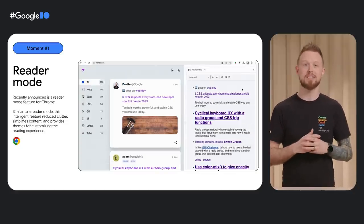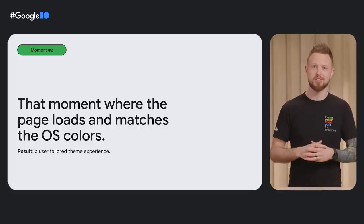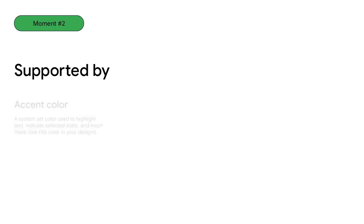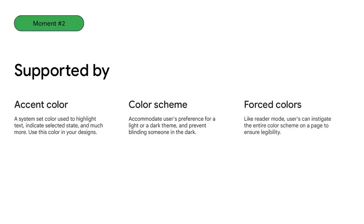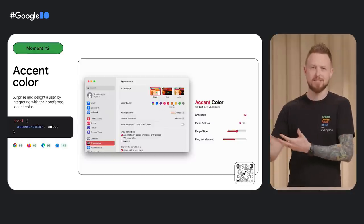Our next tailored web moment is that moment where the page loads and matches the operating system colors. The result is a user-tailored theme experience. This is supported by CSS accent color features, which represent the user's system color preference, the prefers-color-scheme media query for knowing if a user prefers light or dark, and the forced colors media query for knowing if a user has activated a forced colors mode. Surprise and delight a user with accent color — tailor the UI to their favorite color. See in this video as I change the color in my system settings and the UI elements update.